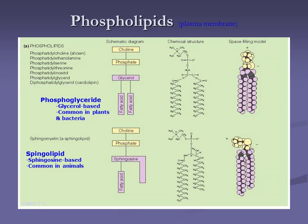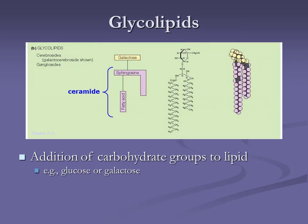For glycolipids, we again see sphingosin and fatty acid as the base. But instead of a phosphate attached, we have a galactose — a type of sugar, carbohydrate, glyco. Typically it's going to be galactose or glucose, the more common ones in animal cells. The fatty acid chains are hydrophobic and aliphatic; the sugar is polar and can interact with water. The base group — sphingosin plus fatty acid — is called the ceramide.